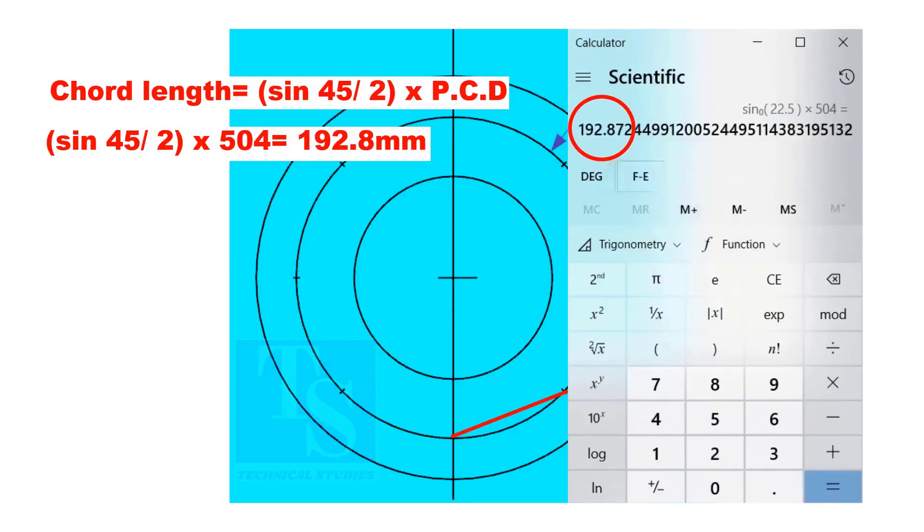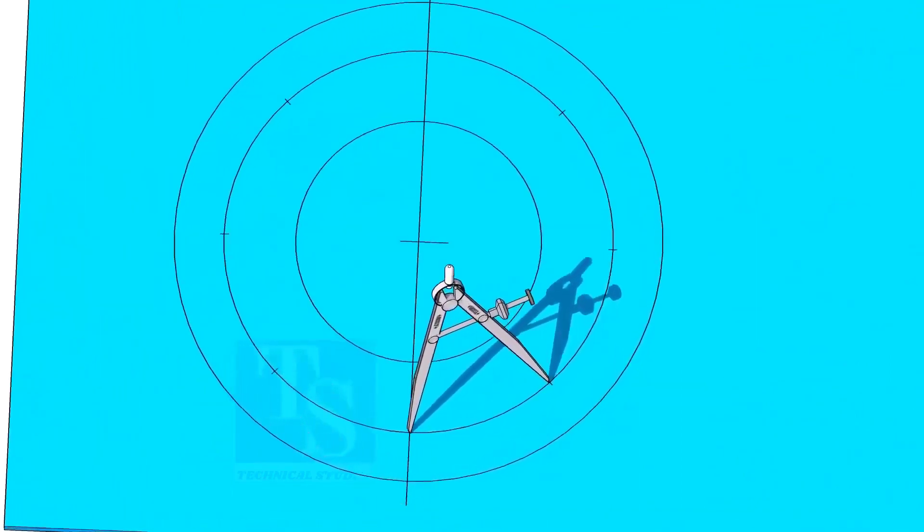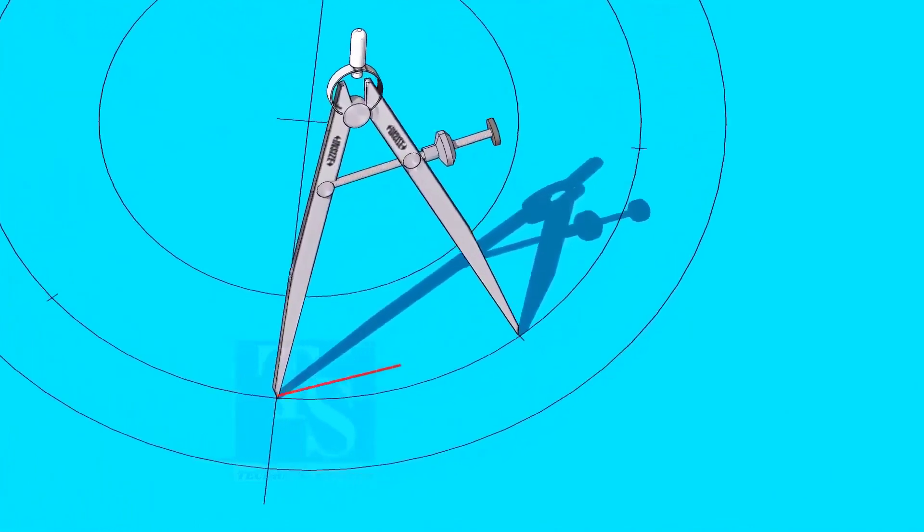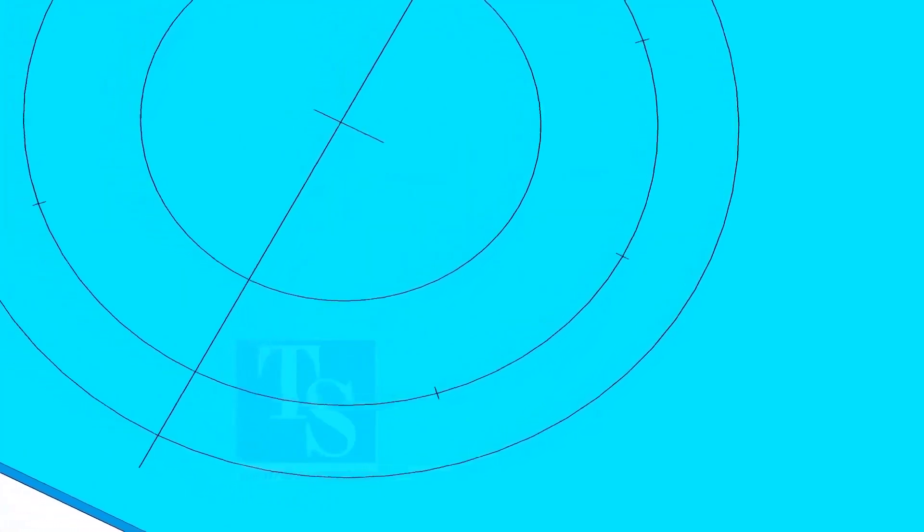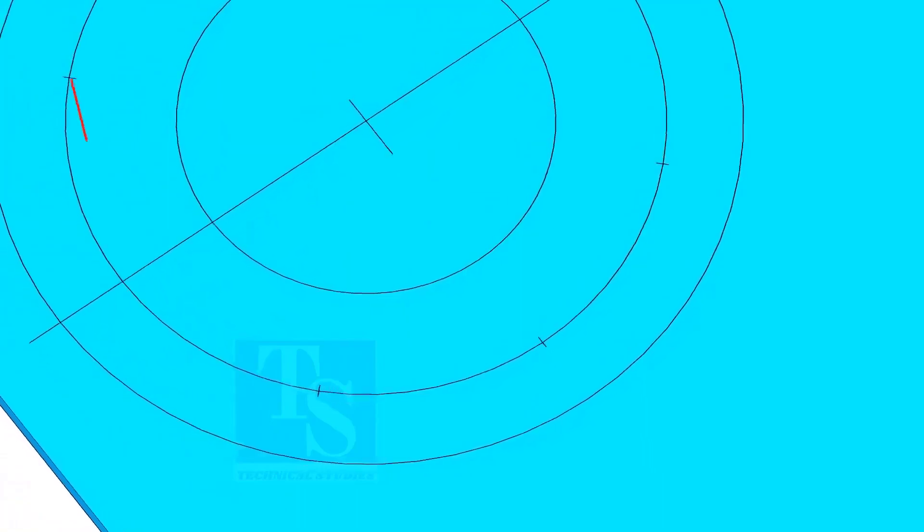The cord length is 192.8 millimeters. Adjust the divider to 192.8 millimeters and divide the PCD into 8 parts. Dividing the circle is not an easy job. It requires good practice. Make sure the last segment is the same as the other segments.